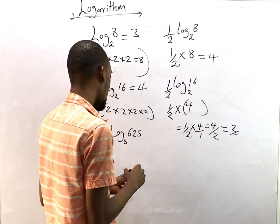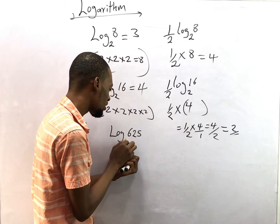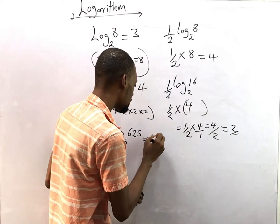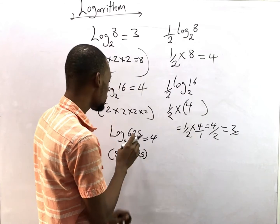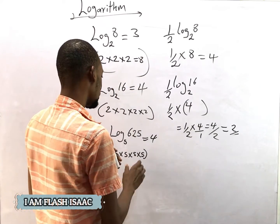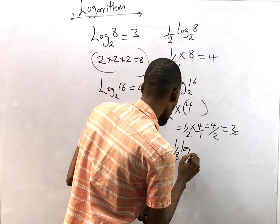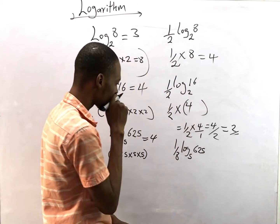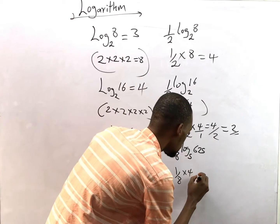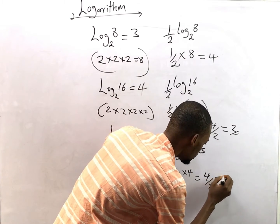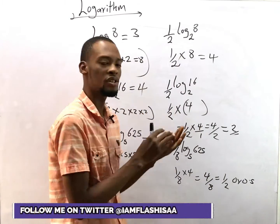Now log 625 to base 5. This means how many times do we multiply 5 to get 625. The answer is 4, because 5 times 5 times 5 times 5 gives you 625 — you can verify that on your calculator. So if you say one over eight times log 625 to base 5, that is one over eight times 4, giving you 4 over 8, which is one over two or 0.5 in decimal.